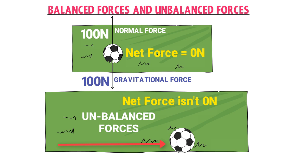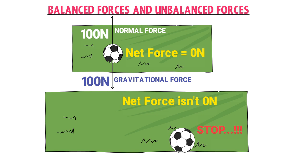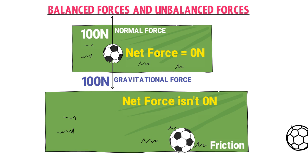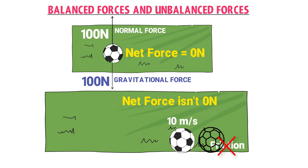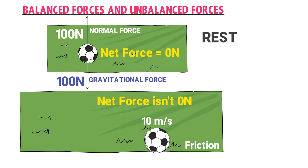Here is a bonus tip: why does the football stop after you kick it? The friction force from the ground resists the motion of the football in the opposite direction, resisting until it completely stops. If there were no friction, the football would continue its state of uniform motion — for example, if it moves at 10 meters per second, it would move at 10 meters per second forever. Therefore, when forces are balanced, an object remains at rest or moves at constant speed; when forces are unbalanced, an object starts moving or accelerates.